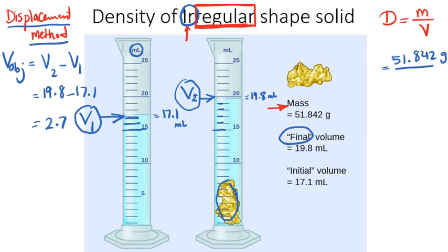So I'm going to calculate that: 19.8 minus 17.1. If you calculate that, you get 2.7 mL. This is the volume of our object. The displacement method says you need to find the relationship between the volume of the object before and after adding it to water. So 2.7, I write this 2.7. The unit is mL, so grams per mL. The density is grams per mL.